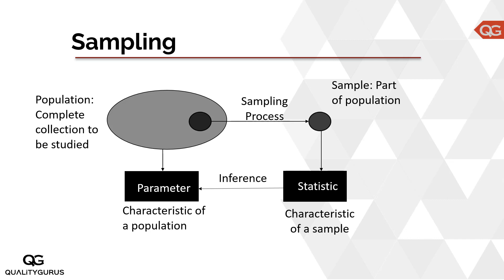The average weight of the sample is called a statistic, whereas the parameter is the characteristic of the whole population. In the iron balls case, the average weight of all the balls is the parameter. Many times it's not possible or easy to find out the parameter, so whatever you find as statistic — the characteristic of the sample — you assume the population also has the same characteristic.